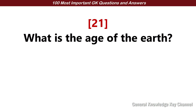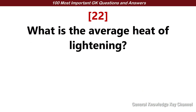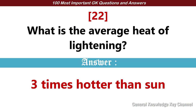What is the age of the earth? About 4.5 billion years. What is the average heat of lightning? Three times hotter than the sun.